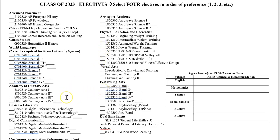The class you want most gets a one, second most gets a two, and so forth for your top four. For classes with a line out to the right-hand side, those classes require a teacher recommendation or approval to enroll. For example, students who want to take culinary arts and move on to the culinary block, having successfully completed culinary arts one, would need to get Chef Gass's signature on one of those lines.